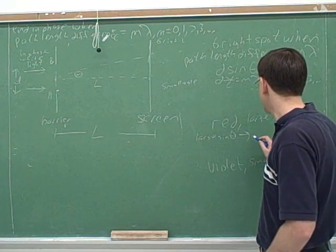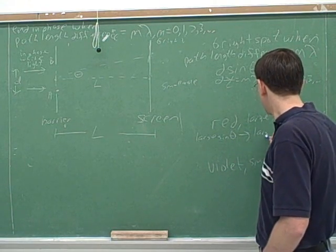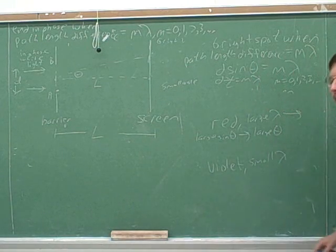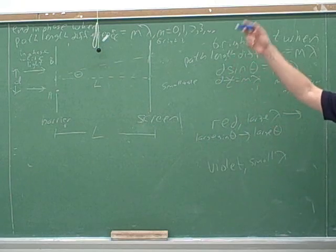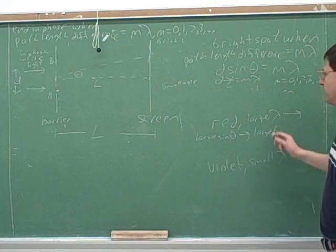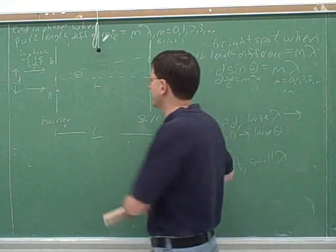For an acute angle, if you have a large sine of theta, that's because you have a large theta. A big angle means a big sine of theta, and we're going to work with acute angles here. You can see from the picture, all the angles will be acute. And then a large theta means that we're going to be further away.